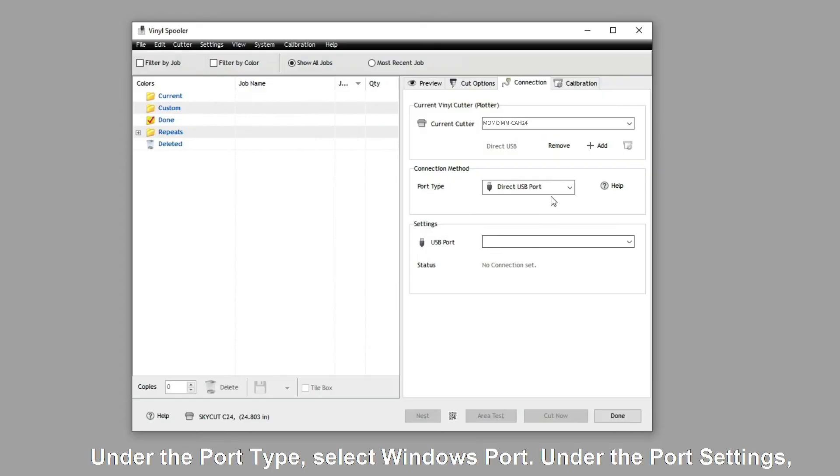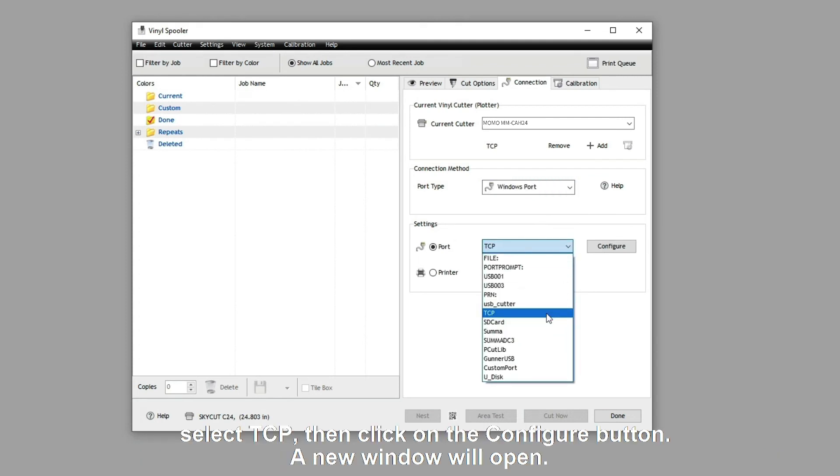Under the Port Type, select Windows Port. Under the Port Settings, select TCP. Then click on the Configure button.